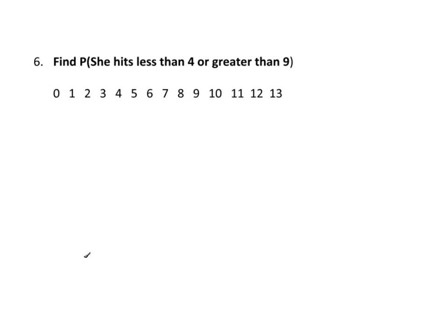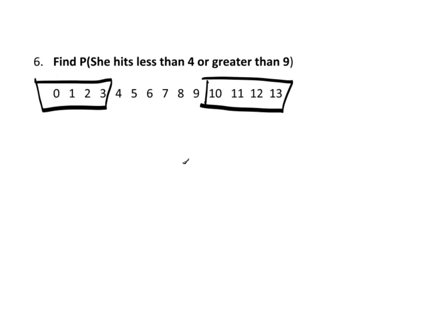Here's the probability that X is less than 4 or greater than 9. Less than 4 is 0 through 3; greater than 9 is 10 through 13. There are a couple of ways to do this. I could use TCStats to find each piece separately — call them probability 1 and probability 2 — and simply add them.